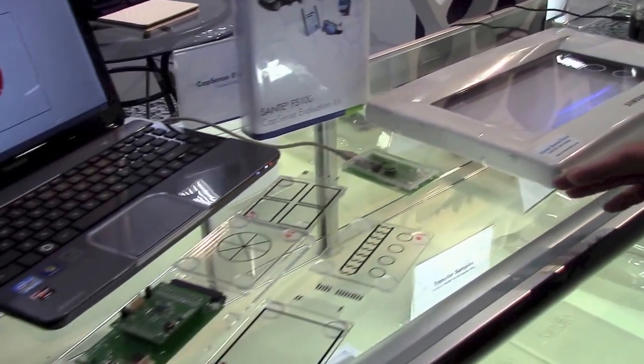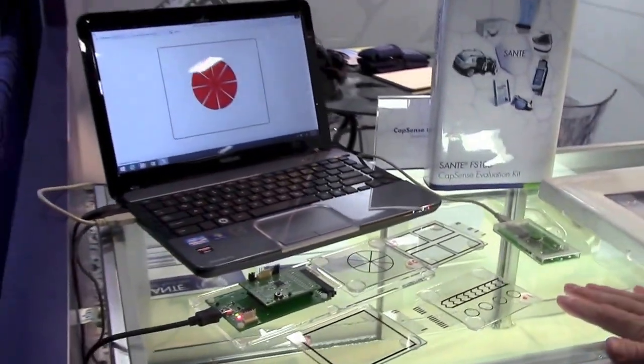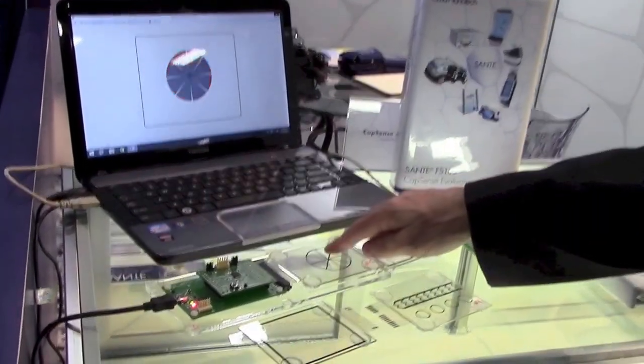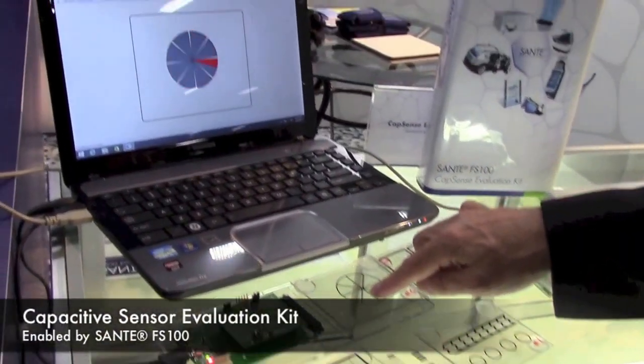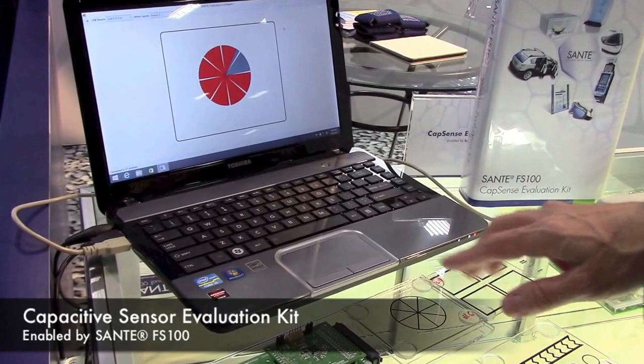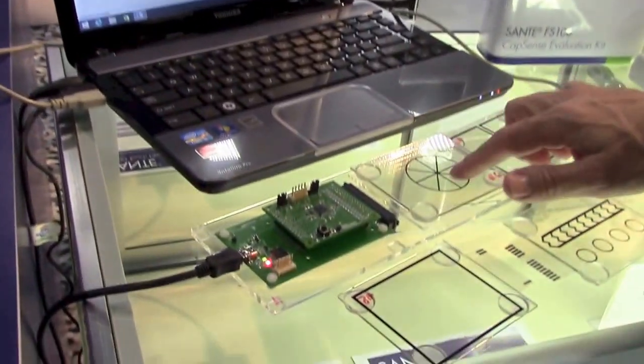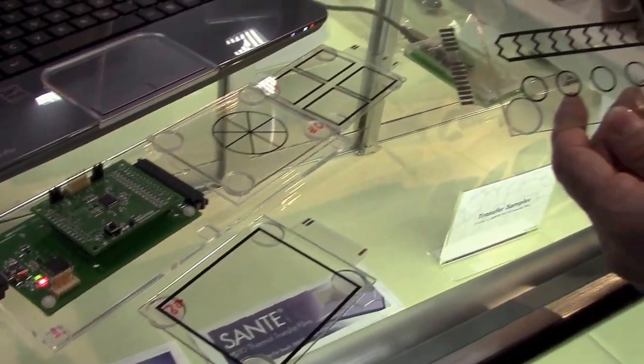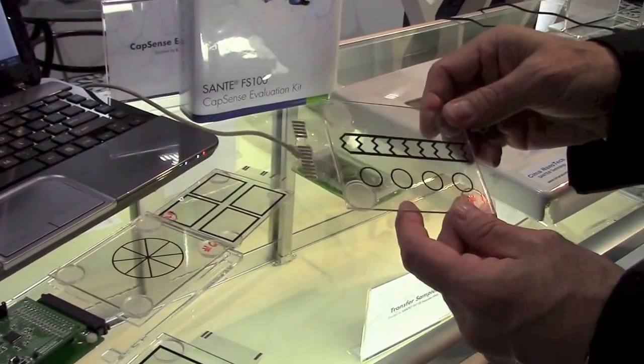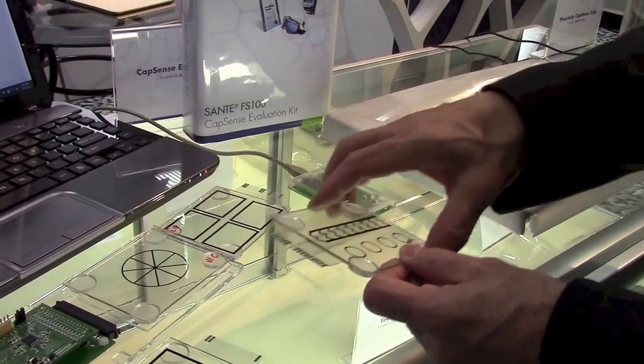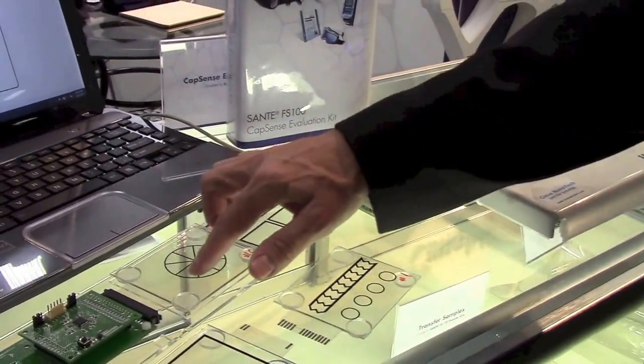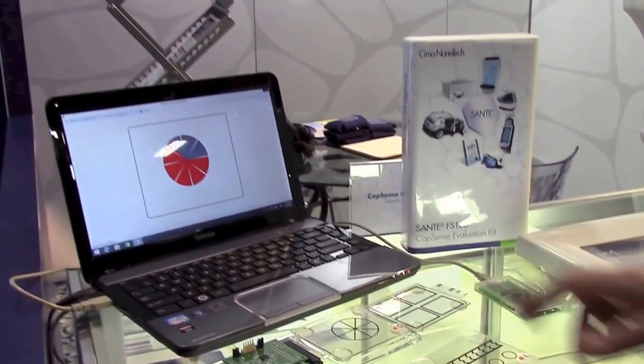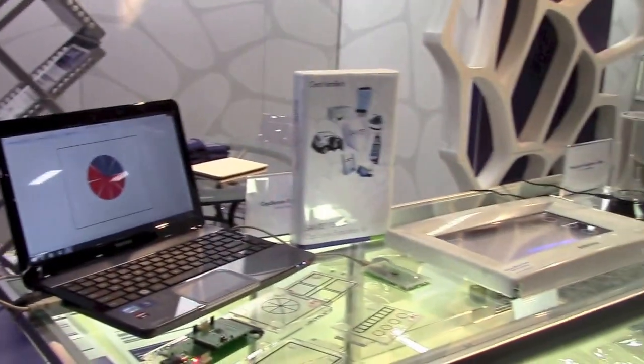Another interesting thing that we're doing now is we're working with some semiconductor companies, partners, to build this evaluation kit. This is a kit that uses a touch sensor IC from a variety of companies, and it comes with an assortment of touch sensors, all built with our Sante film. It can plug in, swap out, and allows people to evaluate and tune the designs for use in CapSense applications.